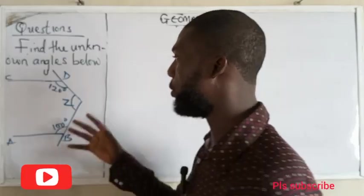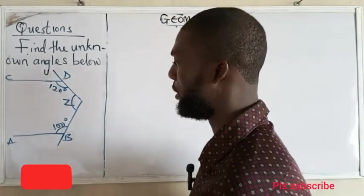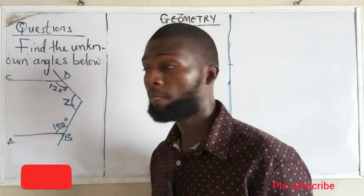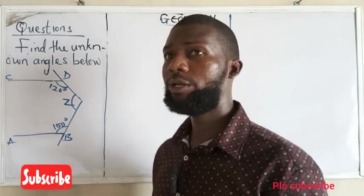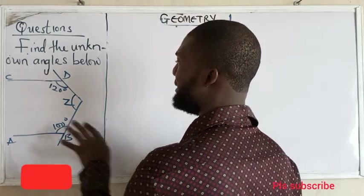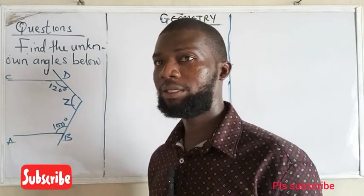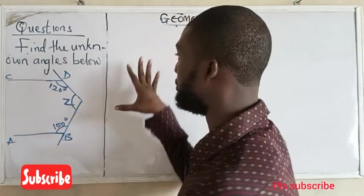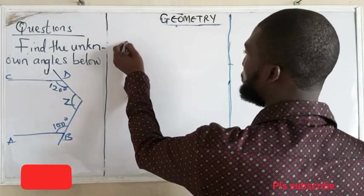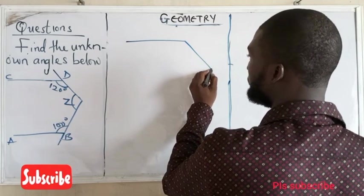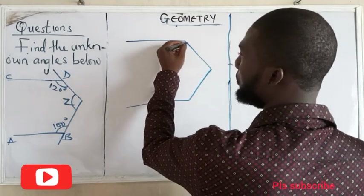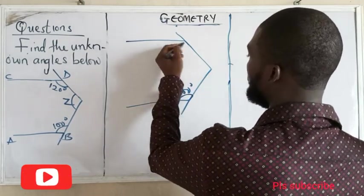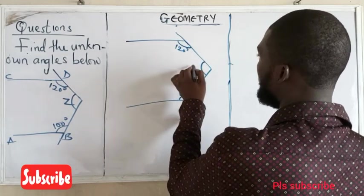The question says: find the unknown angles below. Looking at this diagram, we have 120 degrees here, 100 degrees here, and we are told to find the value of Z. The solution to the question may not be direct — sometimes in mathematics, some answers may be hidden unless you unravel them. So the first thing we have to do is to redraw this diagram. We have 100 degrees and 120 degrees, and this is our Z.